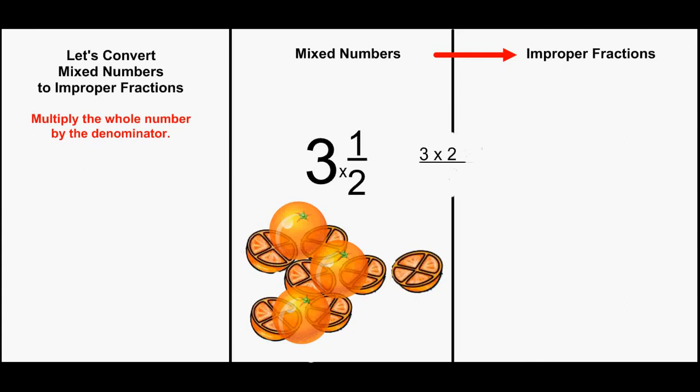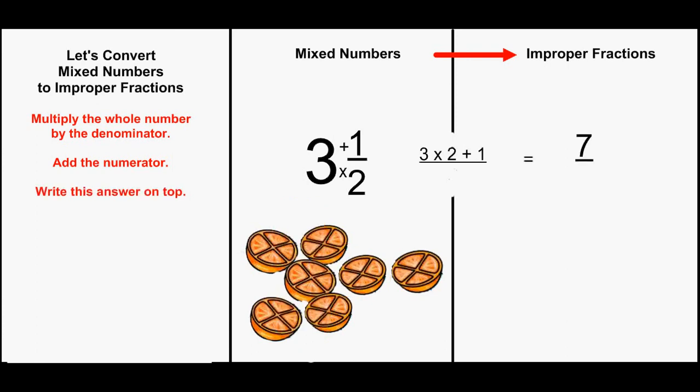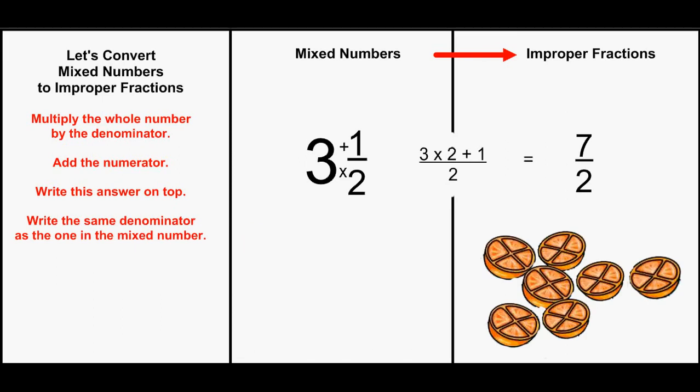Multiply 3 times 2 to show that each of the 3 oranges can be represented by 2 half oranges. Add the half orange that was separate. We have 7. 7 halves of oranges.